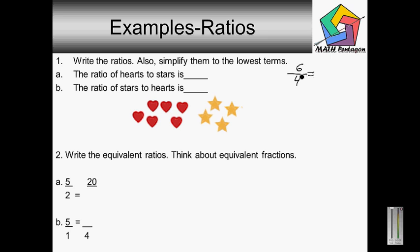Now we can reduce this. Two goes into six three times, and two goes into four two times. So our final answer to A is three over two.